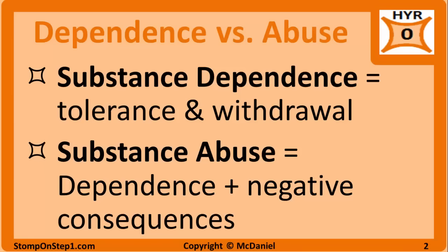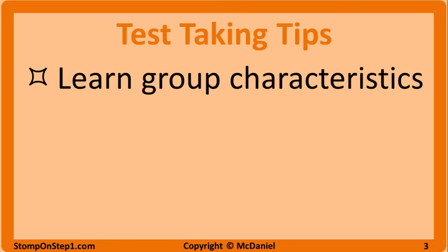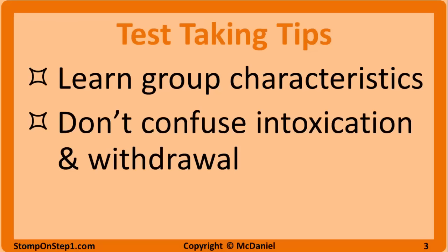There is very specific DSM criteria for each of these terms, but that isn't important for the exam. For simplicity's sake, we will break the drugs down into three different categories: uppers, downers, and hallucinogens. There are slight differences between drugs within individual categories, but for the most part you can get the question right by just knowing the general characteristics of the entire group. For example, you won't see both cocaine and MDMA listed as answers on the same question. Also remember not to confuse intoxication and withdrawal. Most questions are on drug intoxication, but they may specifically ask you about withdrawal, which usually has symptoms that are just the opposite of intoxication. So make sure you read the question carefully.